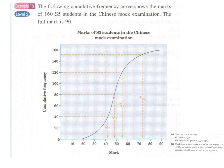Now we come to example 30. The following is a cumulative frequency curve showing the marks of 160 students and the full mark is 90.